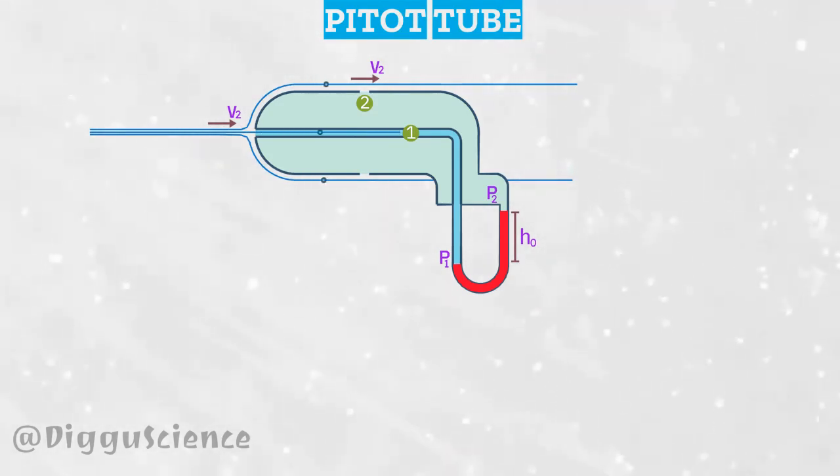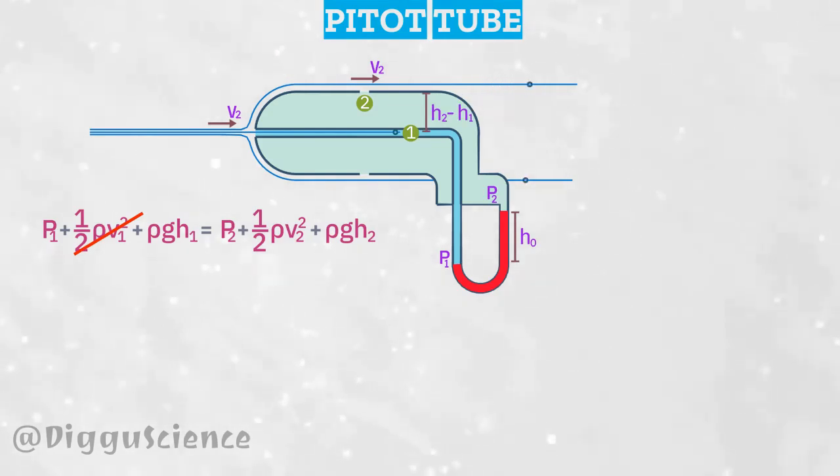Using Bernoulli's law: p1 + 1/2 ρv1² + ρgh1 = p2 + 1/2 ρv2² + ρgh2. The value of v1 is zero because the distance between h1 and h2 is very small. The value of h1 is equal to h2.